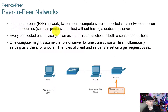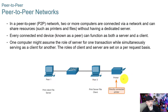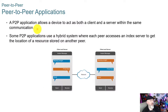In a peer-to-peer network, two or more computers are connected via a network and can share resources such as printers and files without having a dedicated server. Every connected device, known as a peer, can function as both a server and a client. One computer might assume the role of a server for one transaction while simultaneously serving as a client for another. The roles of client and server are set on a per-request basis. For example, peer two can have a printer attached to it, and another computer can send a print request — acting as the client — while peer two acts as the print server.